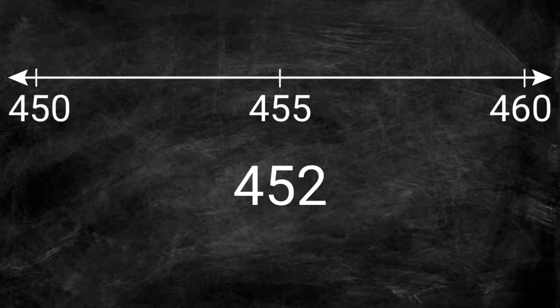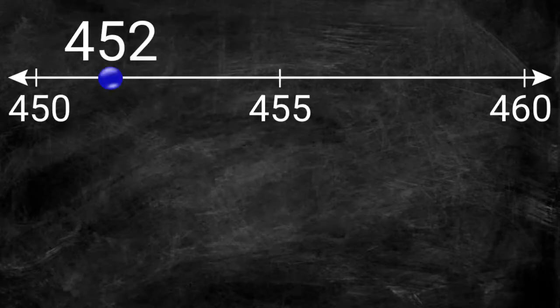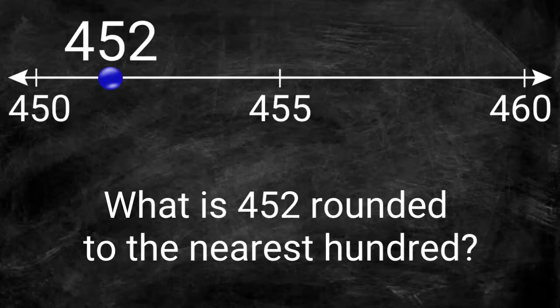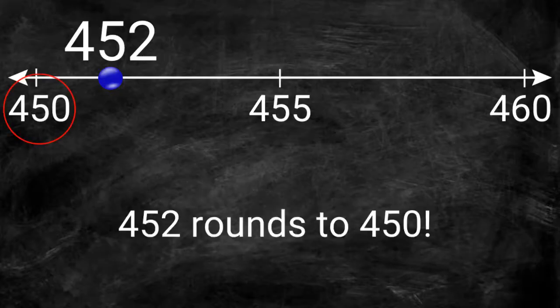455 has to be exactly in the middle. Where should we place 452? 452 goes right here. Now we can round 452 to the nearest 10. Does it round down to 450 or up to 460? 452 rounds down to 450.